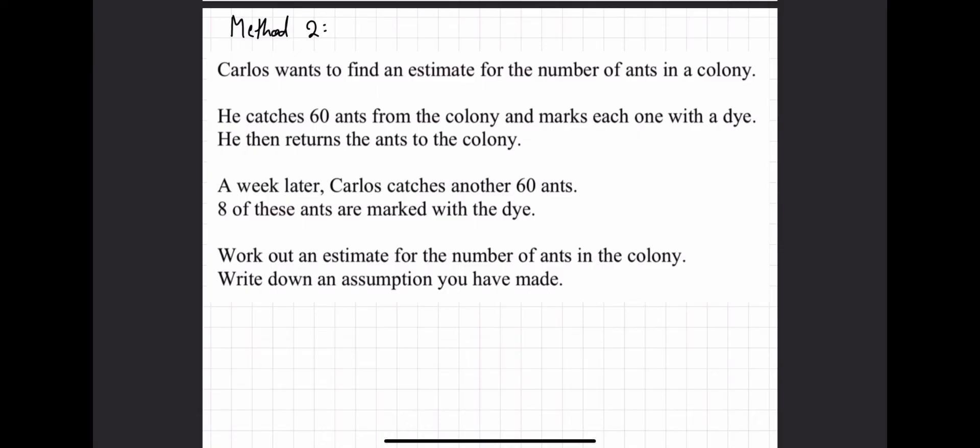I now want to show you a slightly quicker method. If you're good at learning formulae, this might be a quicker method for you. But if you're not, method one is completely fine. So, method two just tells you the population straight away. To do this, you need to use the formula. Second sample divided by marked in second sample and then you times it by originally marked. And this tells you what x is straight away.